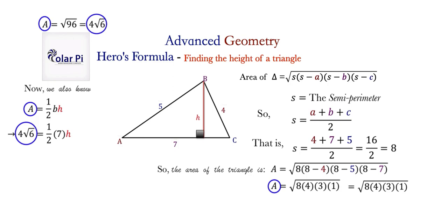So, there, from our earlier calculation, we know that the area of the triangle is 4 root 6. So, that's all I've highlighted there. And otherwise, I know that our base here is 7.